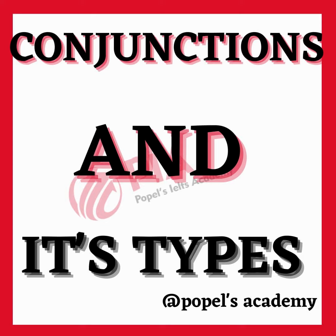Subordinating conjunctions: these conjunctions connect a dependent clause to an independent clause. A dependent clause cannot stand alone as a sentence and needs an independent clause to make sense. Some common subordinating conjunctions are although, because, since, while, if, when, and after. Example: although it was raining, she went for a walk.